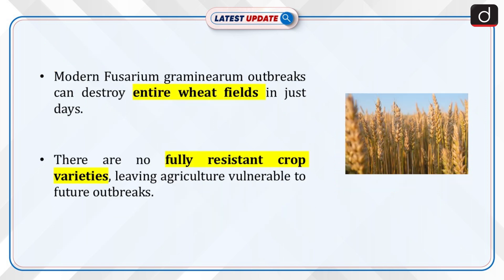Modern outbreaks of Fusarium graminearum can wipe out entire wheat fields within days. No fully resistant crop varieties are available, leaving agriculture vulnerable to future outbreaks.